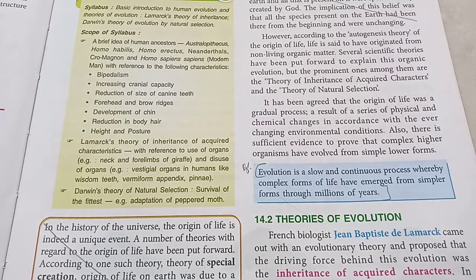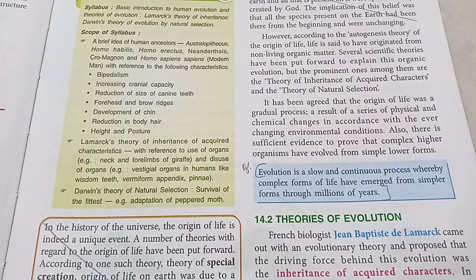It explains how life developed on earth. According to this, billions of years ago there was no life on earth, but there was autogenesis — that is, life was accidentally created through various chemical reactions.